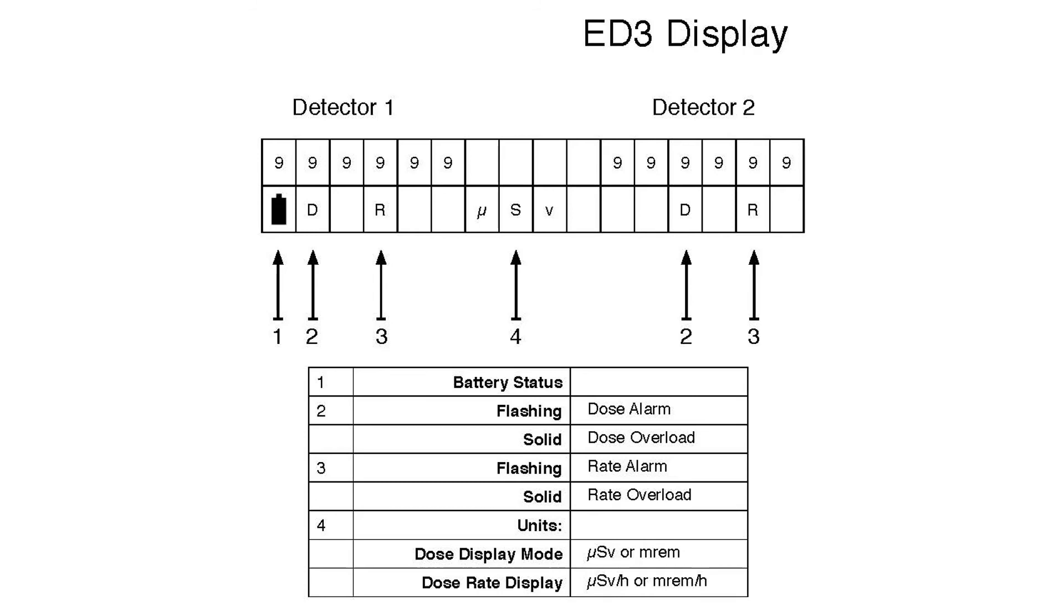The ED3 has two lines of display. The top line is numerical information for the dose or dose rate value. The bottom line is status, such as battery status, whether the unit is in dose or dose rate mode, for D or R, and also the units of measure, whether they be SI or US units. It's divided in half. On the left is detector one and on the right is detector two. Normally, the display is in a solid mode, either with the backlight on or off.